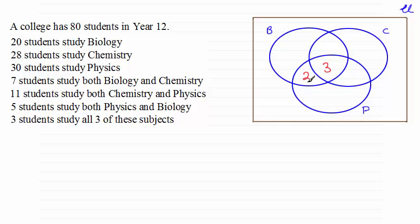This two, remember, refers to two students doing biology and physics but not chemistry. But yet we still have five people doing biology and physics.